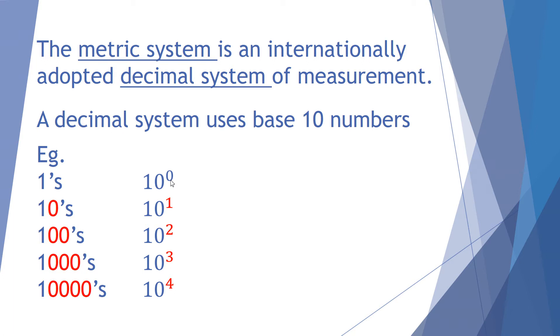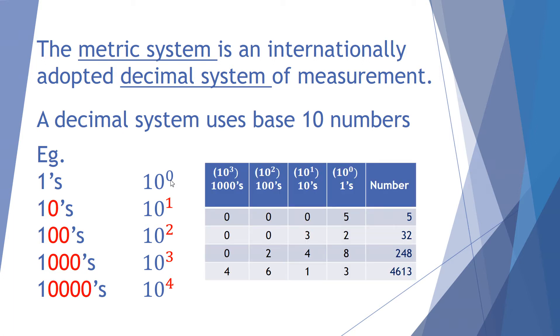So hundreds, thousands, and ten thousands. In fact, our number counting system is based on this. The number 5 is based on there's no thousands, no hundreds, no tens, one lot of, sorry, five lots of 1, so it's a 5. The number 32 has no thousands, no hundreds, three tens and two ones, and so forth up to when I've got four in the thousands column, six in the hundreds, ones in the tens and threes in the ones, that's the number 4,613. We've used this system for quite some time.